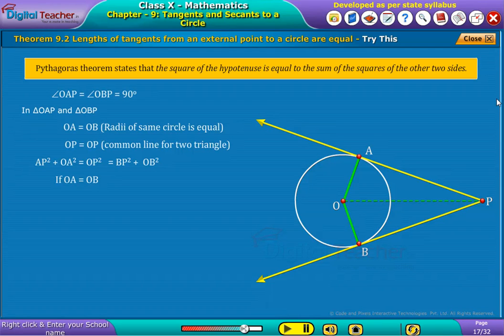If OA is equal to OB, we obtain AP squared is equal to BP squared. By taking square root on both sides, we get AP equal to BP. Hence, we obtain the same solution as theorem 9.2.